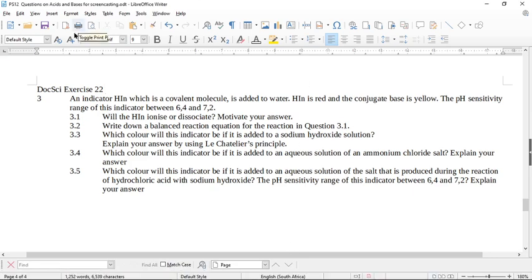Okay, let's look at Doc Scientia Exercise 22, Question 3. An indicator, H indicator, which is a covalent molecule, is added to water. H in is red and its conjugate base is yellow. The pH sensitivity range of this indicator is between 6.4 and 7.2. So this means that between 6.4 and 7.2, it's going to go from red to yellow.